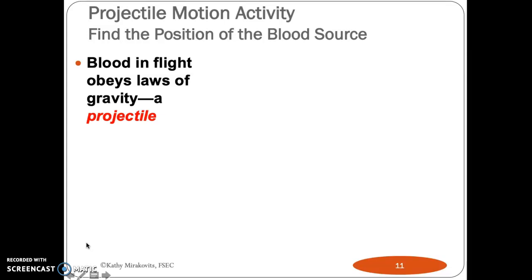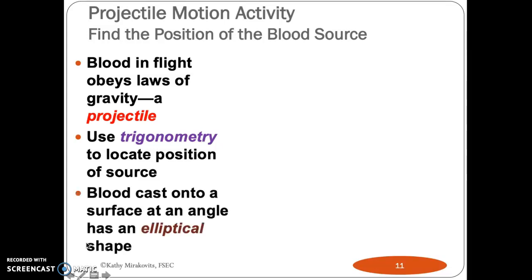Because blood flying through the air obeys the same laws of gravity that a projectile would. And when it hits, we're going to use trigonometry to calculate what angle it hit at, which is horrible grammar. And you can actually use trigonometry and string to figure out where the blood spatter came from. And that string thing we'll get to later.